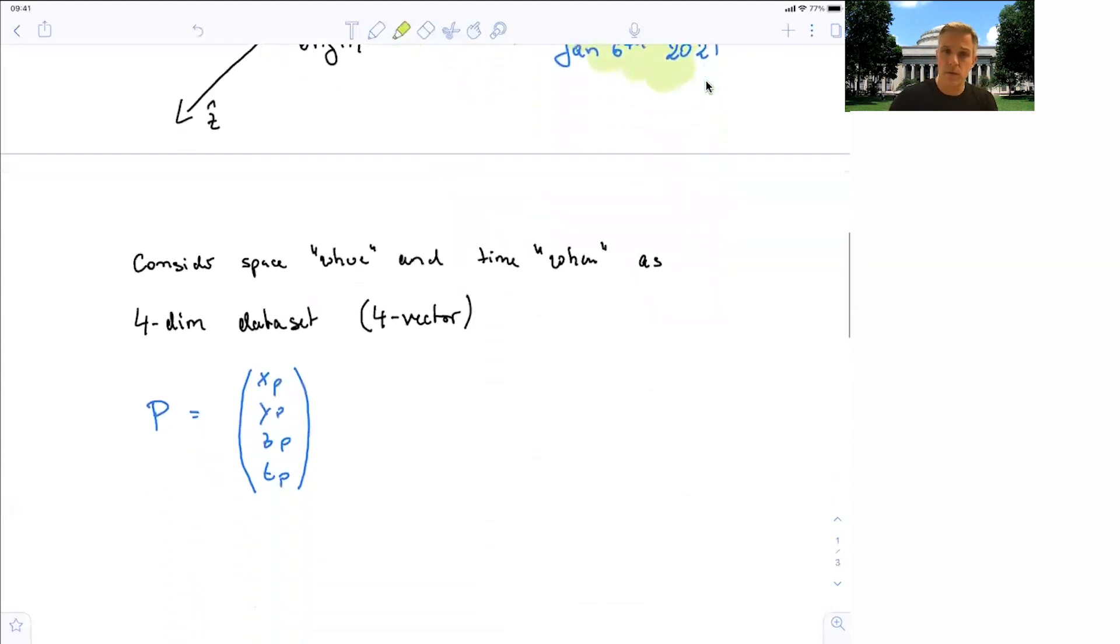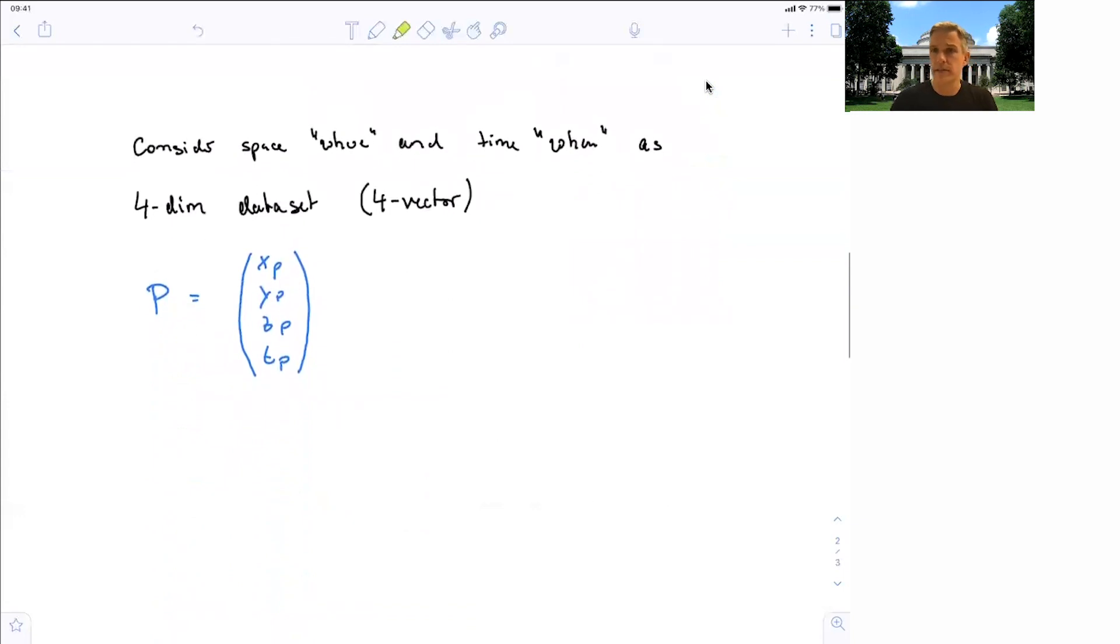So when we want to consider an event, describing an event, we have to consider the space, the where, and the time, the when. And we can do this as a four-dimensional vector, a four-vector data set. And so our event, Professor Kluter exploded, can be described with this vector P, which has an x-coordinate, a y-coordinate, a z-coordinate, and a time-coordinate.